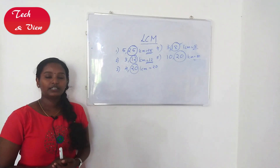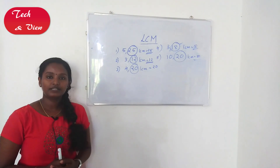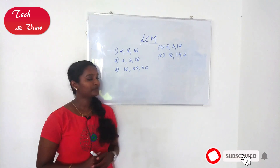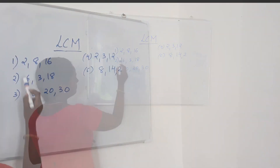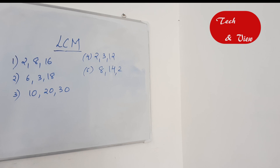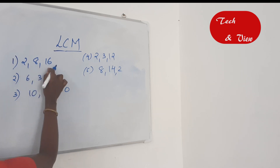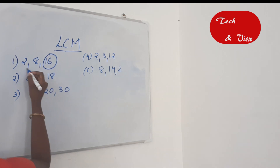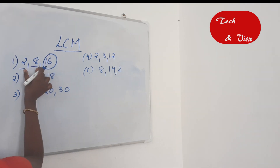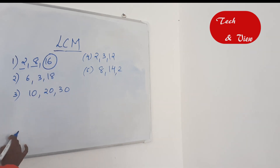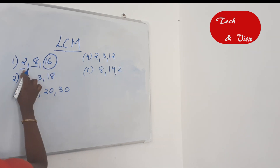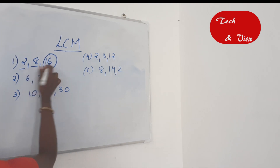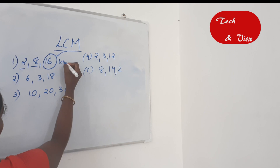Now we are using three numbers. First question: 2, 8, 16. The largest number is 16. The remaining numbers must be divisible by 16. 16 divided by 2 is 8 — fully divisible. 16 divided by 8 is 2 — fully divisible. Both numbers are fully divisible, so LCM is 16.